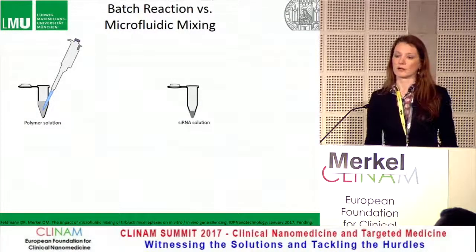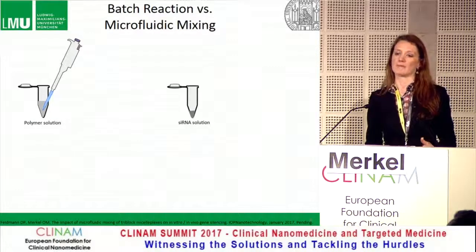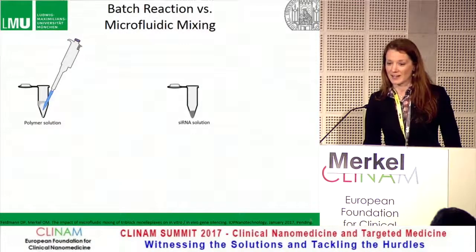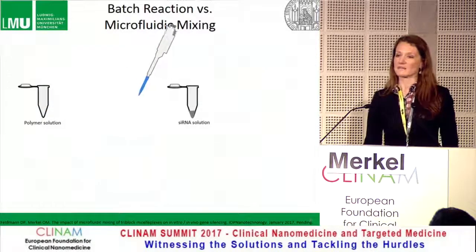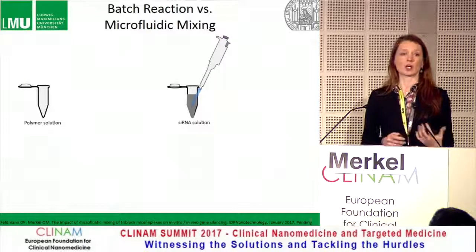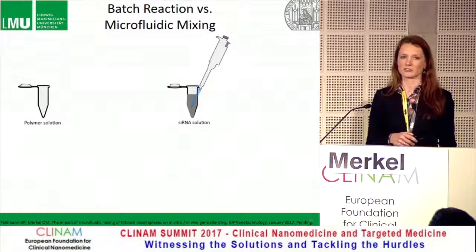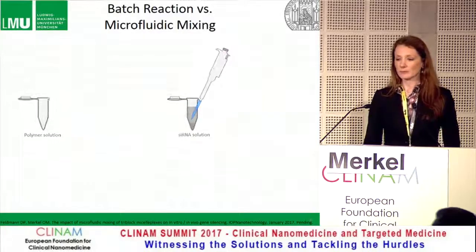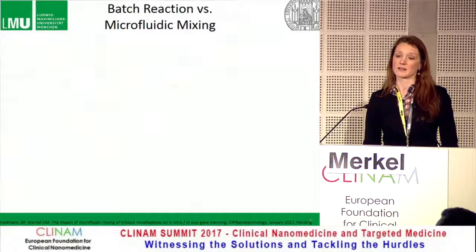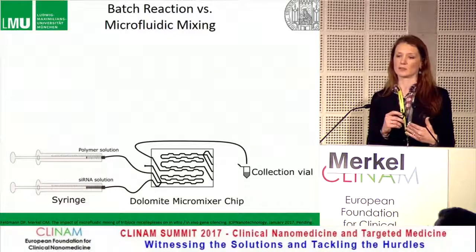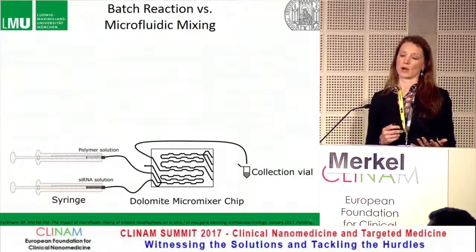We're not experts in microfluidics, but we've been using it and comparing it to what we call a batch reaction. Usually when we make a batch, we just pipette a few microliters together — a polymer solution is mixed with a nucleic acid solution by turbulent mixing, and over time the positively charged polymer and negatively charged nucleic acid nanoprecipitate and self-assemble. With microfluidics, you don't have turbulent mixing but laminar mixing, and the actual mixing happens by diffusion in the channel, which helps form more monodisperse and reproducible formulations.